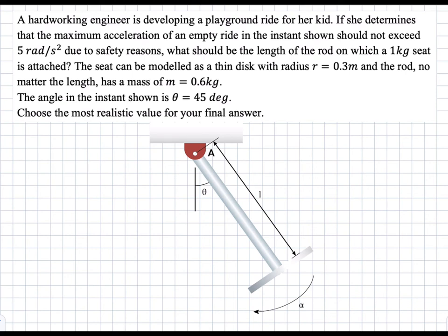In this problem, we have a pendulum — a playground ride — for which we have to determine the length that yields a maximum angular acceleration of 5 radians per second squared when no one's sitting on it. We have a rod of length L that weighs 0.6 kilograms regardless of length, and at the bottom there's a disk of radius 0.3 meters with a mass of 1 kilogram attached at the end. We analyze the instant at which angle theta is 45 degrees. A longer length leads to larger angular accelerations, so our length will be the maximal length.